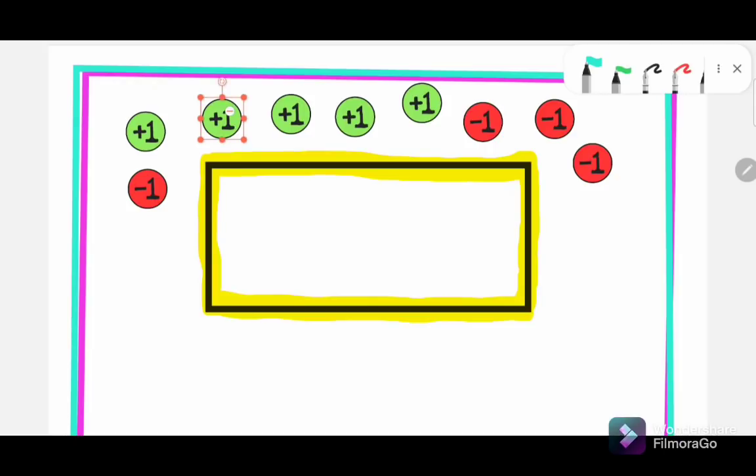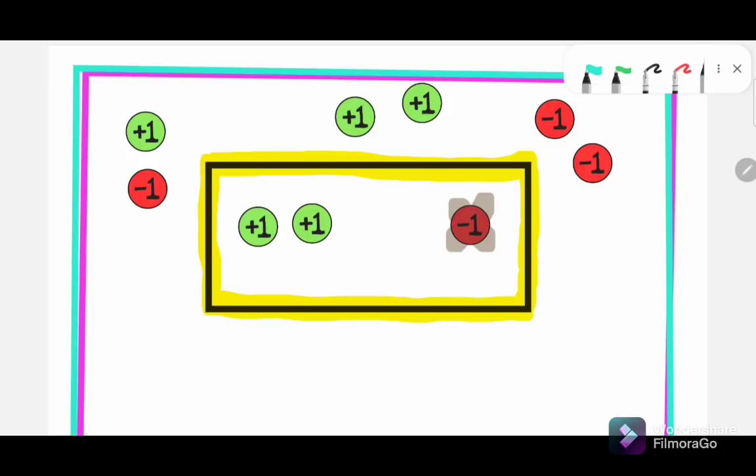Let's say I add two green balls into the box and one red ball. As we know, plus one and minus one are opposite to each other so we can cancel them out. Now the worth of the whole box, the worth of the box inside is plus one.